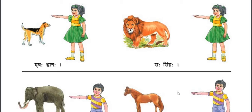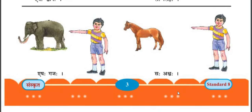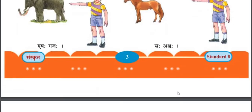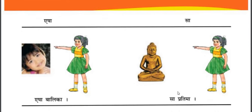Eshaha Shwanaha — this is a Dog. Saha Sihaha — that is a Lion. Eshaha Gajaha — this is an Elephant. Saha Ashwaha — that is a Horse. So all the pictures are related with Male Gender, means Pulling. And Eshaha means Yaha — 'this,' and Saha means Vaha — 'that.'